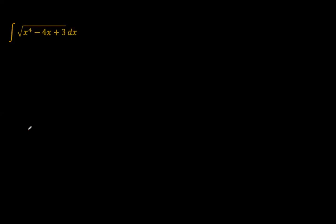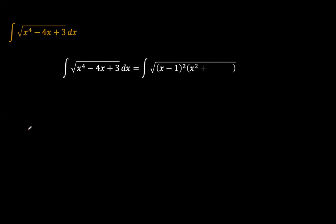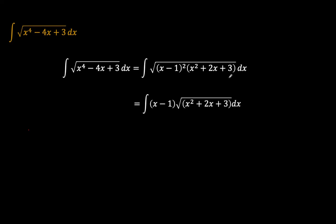The first thing with this problem is you just want to try to factorize whatever is inside the square root sign. And by long division, you'll soon understand that whatever is under the square root sign is (x minus 1) squared times (x squared plus 2x plus 3). And then you can pull out the (x minus 1), giving us (x minus 1) times the square root of (x squared plus 2x plus 3) as the integrand.